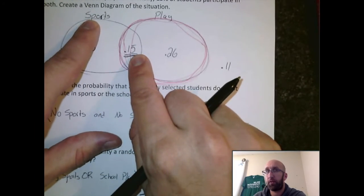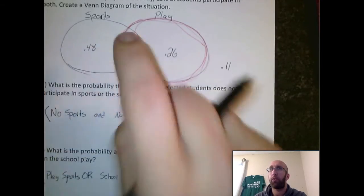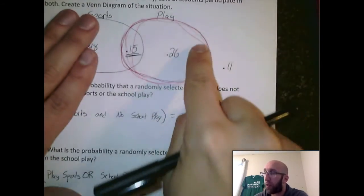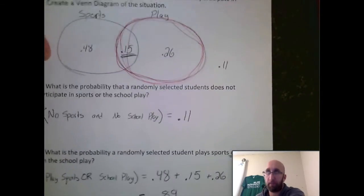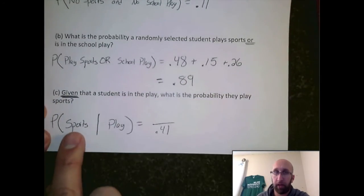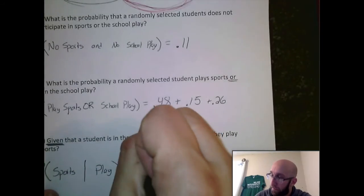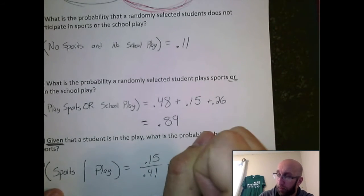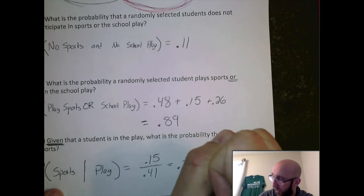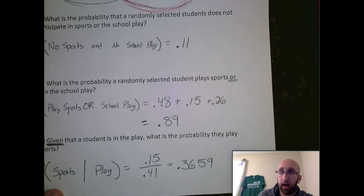So you can think of it kind of like a pie. I have this whole pie and we need to figure out what piece of the pie represents playing sports. Well, this little sliver right here, which is 0.15. So we're going to take 0.15 divided by 0.41. And I would use a calculator for this. I already have the answer for us is 0.3659.